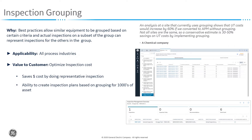Applicability: this is applicable for all process industries and wherever you are having an RBI 580 program. Value to the customer: it helps you further optimize the cost and saves you money by doing representative inspection. It also helps in efficiency because it helps you to create inspection plans based on grouping for thousands of assets.